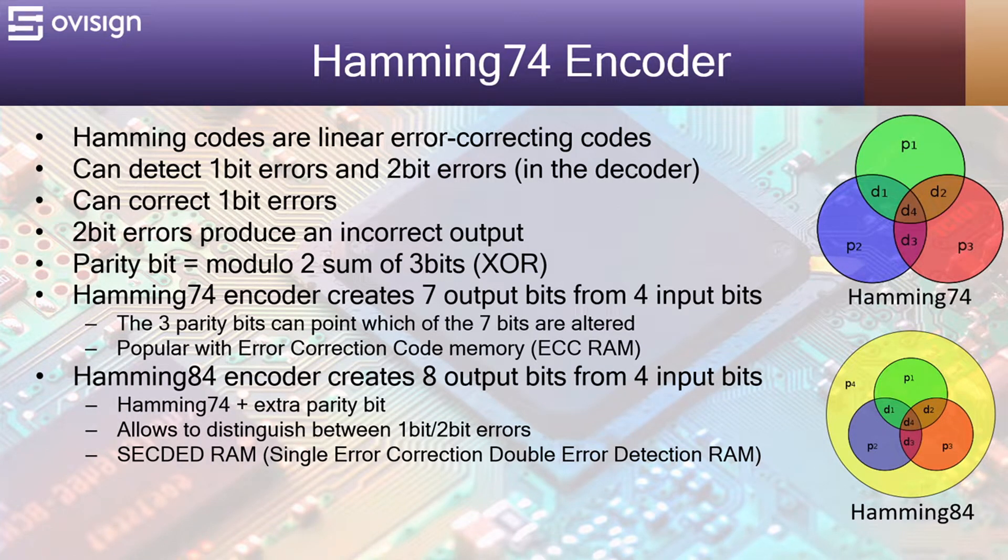In this video we are going to find out what a Hamming encoder is and how to implement a digital circuit for a Hamming 7.4 or a Hamming 8.4 encoder using Verilog. The circuit is synthesizable for FPGA and ASIC.